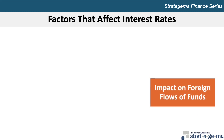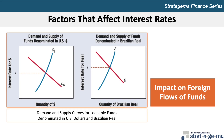Since a currency's interest rate depends on the demand for and the supply of loanable funds in that currency, the interest rate of one currency typically differs from the interest rates of other currencies. This exhibit illustrates the supply and demand curves for the U.S. dollar and for the Brazilian real. Although the demand curve should be downward sloping and the supply curve upward sloping for every currency, the actual positions of these curves can vary among currencies. The demand and supply curves are farther to the right for the dollar than for the Brazilian real, because the amount of U.S. dollar-denominated loanable funds supplied and demanded is much greater — the U.S. economy is much larger than Brazil's economy.